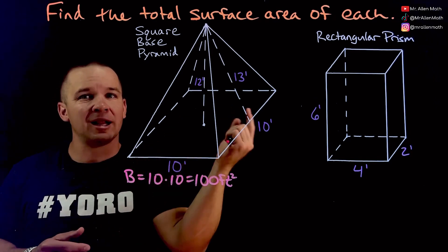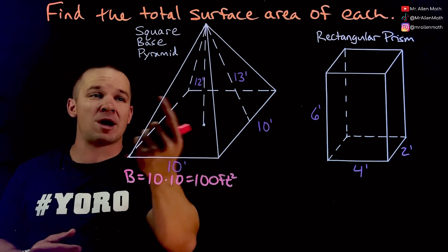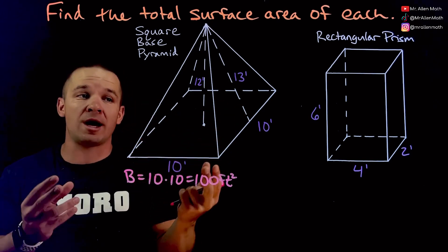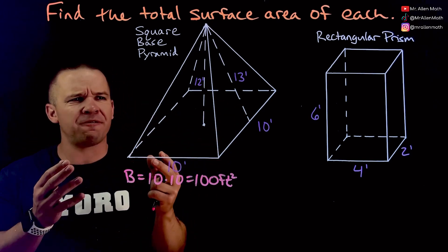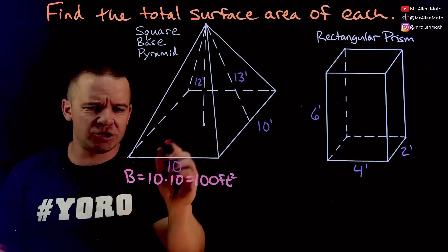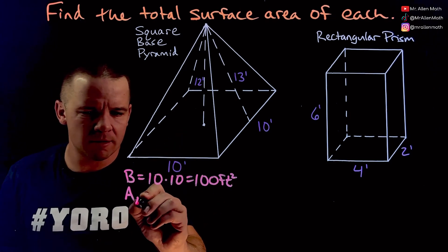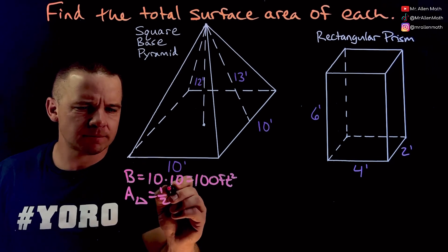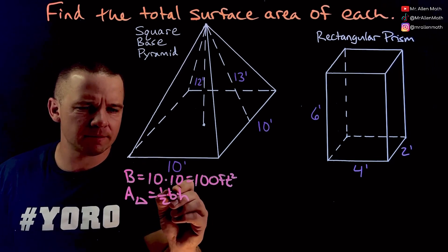All right now on to the lateral area which is the area that wraps around like this, those are all triangles here. So how am I going to figure out the area of a triangle? Well let's jot that down real quick, so we got area of a triangle that's one half base times height.